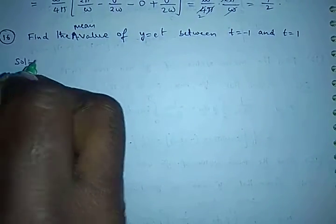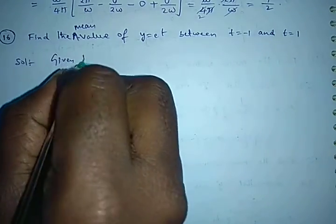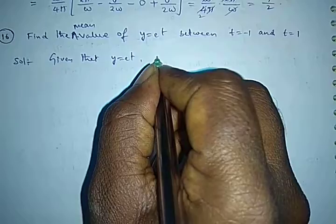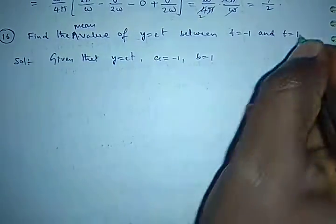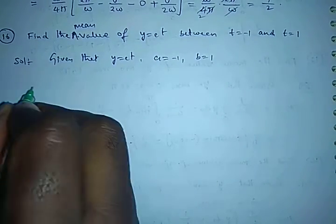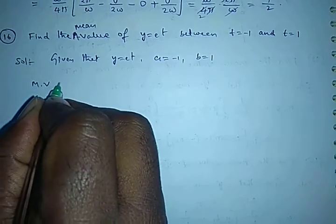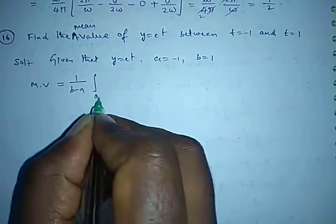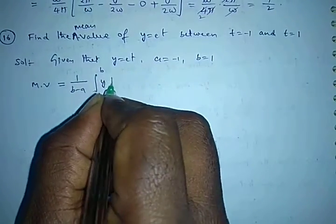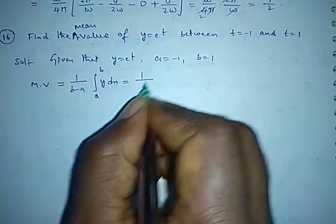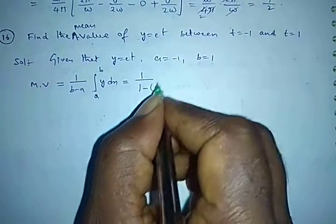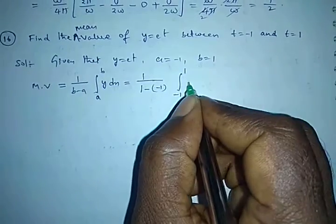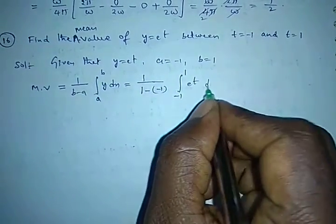Solution. First, write down the given data: y = e^t, lower limit is minus 1, upper limit is 1. The mean value formula is: mean value = (1 / (b - a)) × integral from a to b of y dx, which equals (1 / (1 - (-1))) × integral from -1 to 1 of e^t dt.